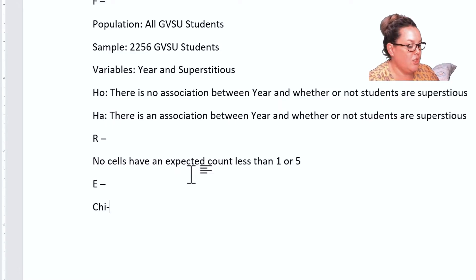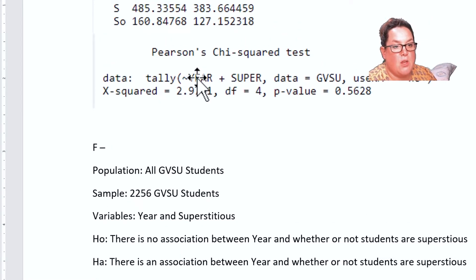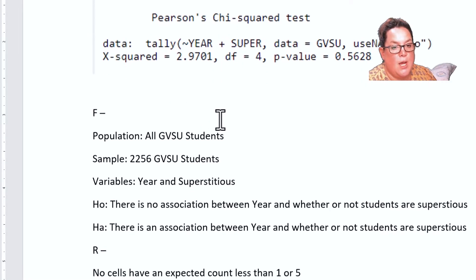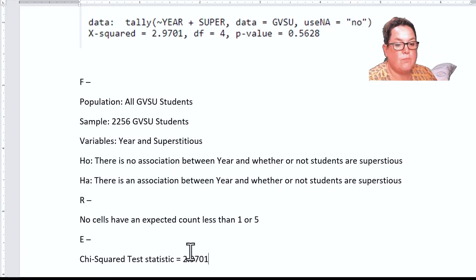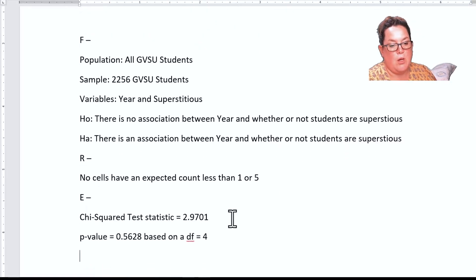For execute calculations, I already have my chi-squared test statistic because it's been calculated for me. You can see it's right here, so that's 2.9701. The p-value is 0.5628, you can see that here, and this is based on degrees of freedom equal to 4. That is a large p-value.